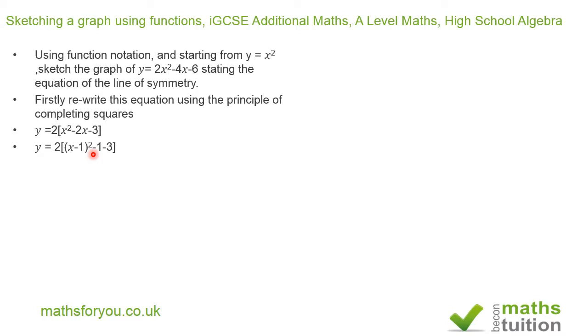So we then end up with 2 into x minus 1 squared minus 1 minus 3, which gives us y equals 2 times x minus 1 squared minus 4.